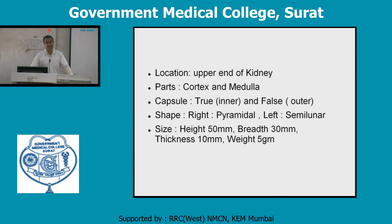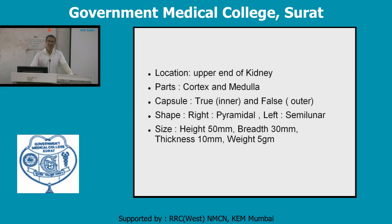Structurally and microscopically, the cortex and medulla are also different — we will see this later. The shape is: right suprarenal is pyramidal and left suprarenal is semilunar. Regarding size, the height is approximately 50 mm, breadth is approximately 30 mm, thickness is approximately 10 mm, and weight is approximately 5 grams.